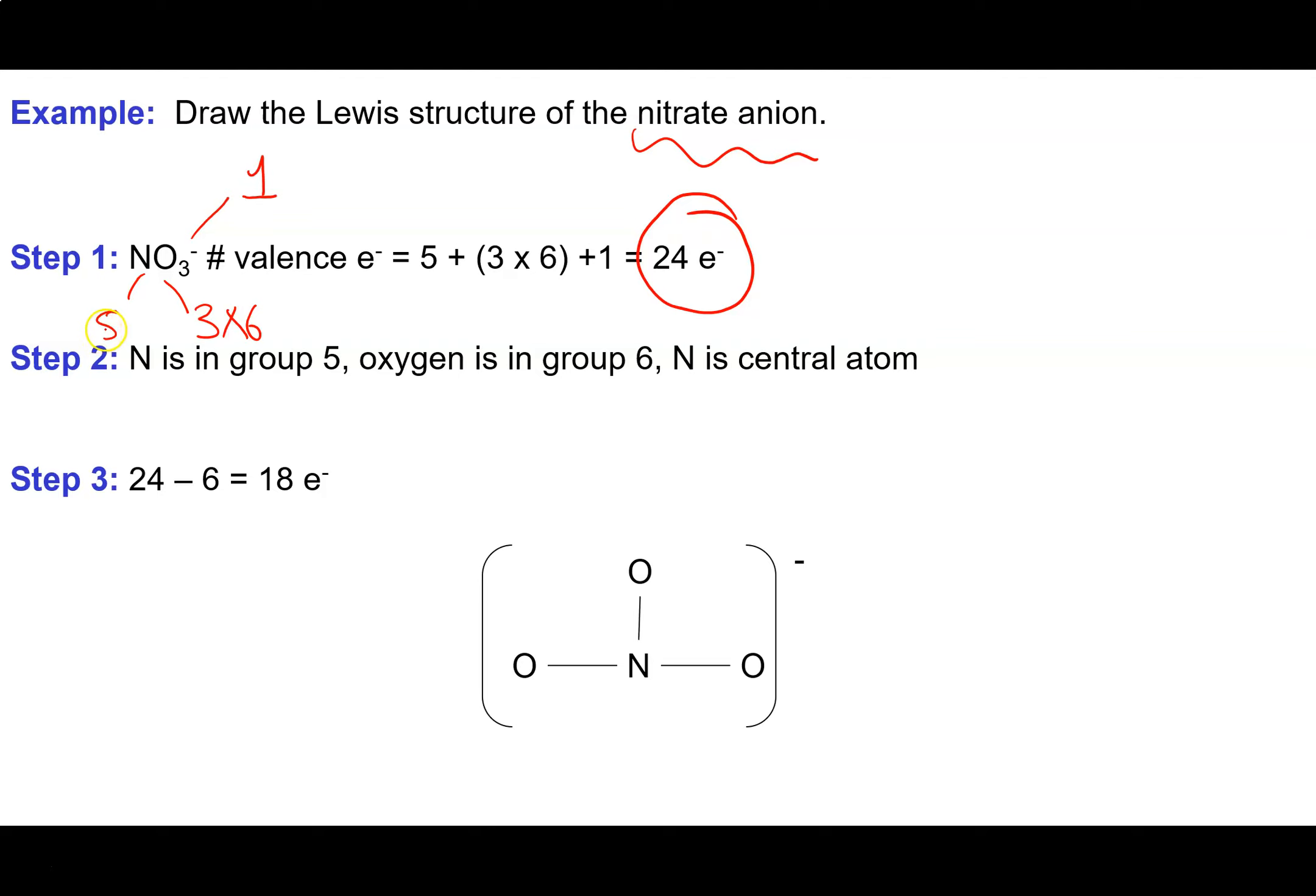As nitrogen is in group 5 and oxygen is in group 6, the nitrogen goes in the middle and the oxygens are on the outside. We need to connect those with at least single bonds just to form any kind of structure at all. I like to put in the parentheses and the charge before I get too far along. I began with 24 electrons and I have to use six of them just to get the basic structure. That leaves 18 to finish everything else off.